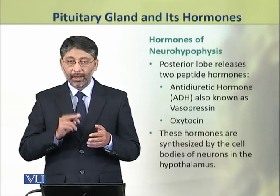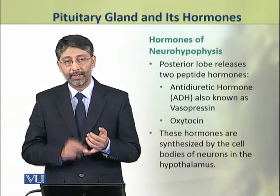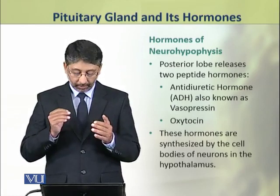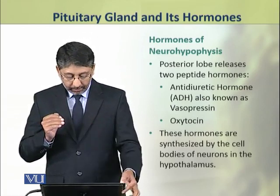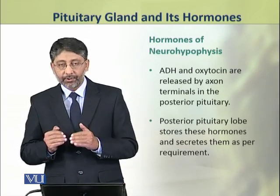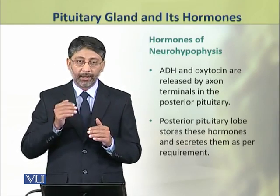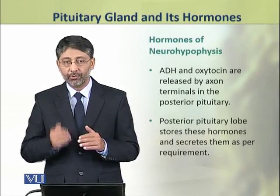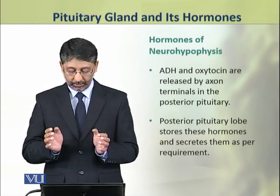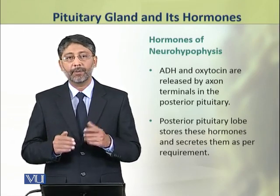These two hormones are peptide hormones: antidiuretic hormone (ADH), which is also known as vasopressin, and oxytocin. The ADH and oxytocin are released by the axon terminals in the posterior pituitary. The posterior pituitary lobe stores these hormones and secretes them as per requirement.